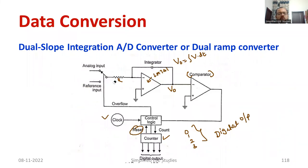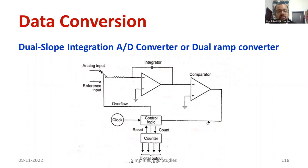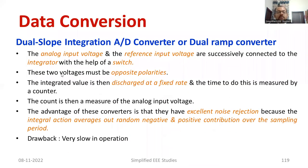There are lots of advantages: noise is rejected completely and the operation is precise with very high accuracy compared to other methods. However, the main drawback is that the process takes a lot of time to convert the analog value to a digital value. That is the major setback of this dual slope integration ADC converter.